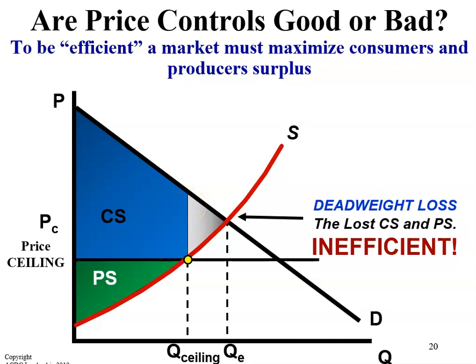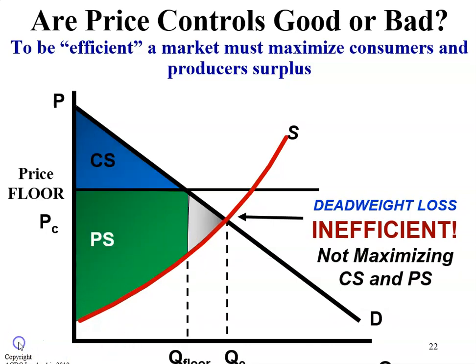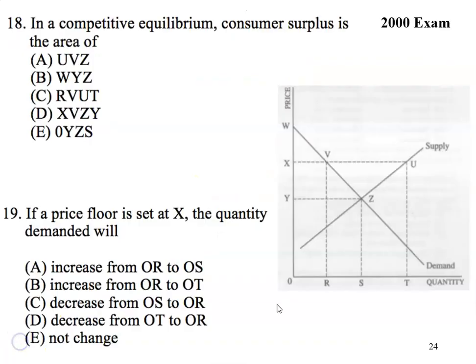The deadweight loss represents the lost consumer and producer surplus, resulting in inefficiency. A price floor would also result in a deadweight loss and inefficiency, because the quantity supplied is greater than the quantity demanded. Pause the video and see if you can answer these questions. The answer to 18 is B, and the answer to 19 is C.